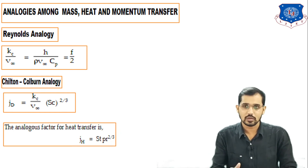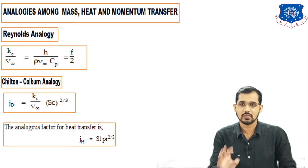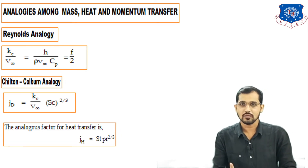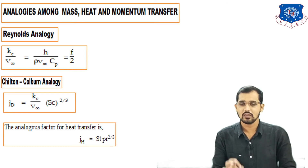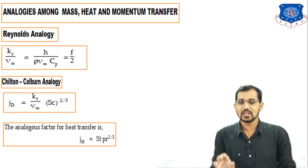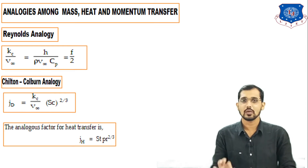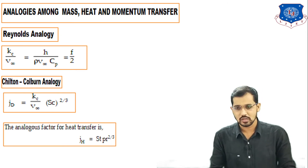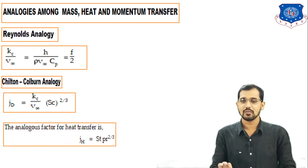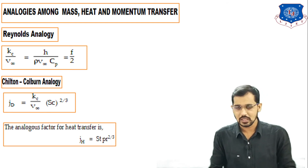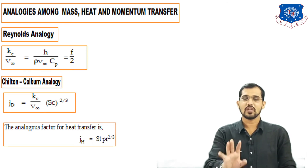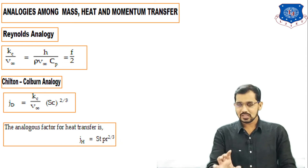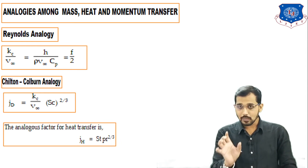This analogous behavior is very important and a question can be asked for 7 marks. The first analogy is given by Reynolds. The Reynolds analogy equation is: Kc/V∞ = H/(ρV∞Cp) = f/2, where H is the heat transfer coefficient, ρ is density, V is velocity, Cp is specific heat at constant pressure, and f is the friction factor.